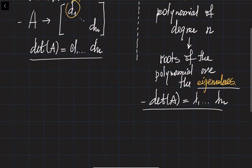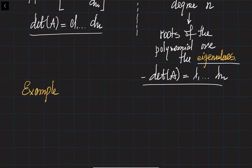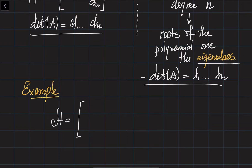Let's do an example. Say you're given the matrix A with entries 1, 6, minus 1, and minus 4.